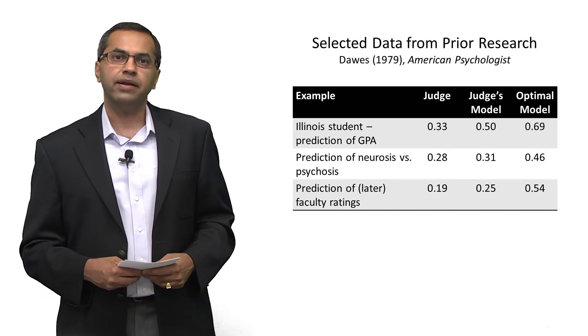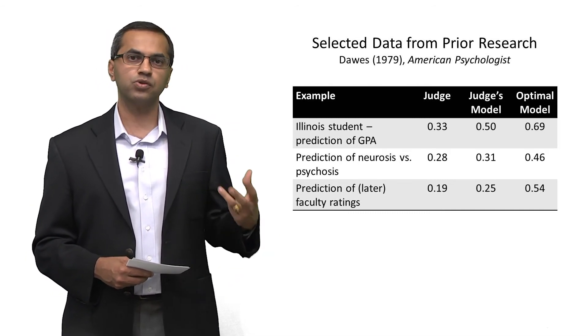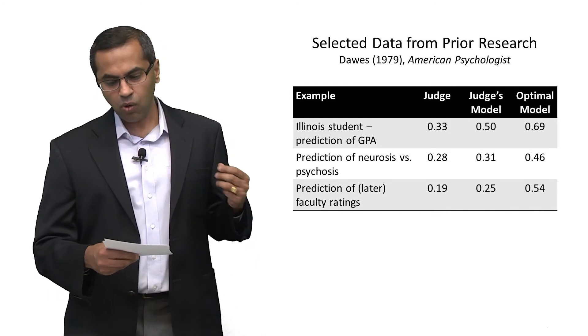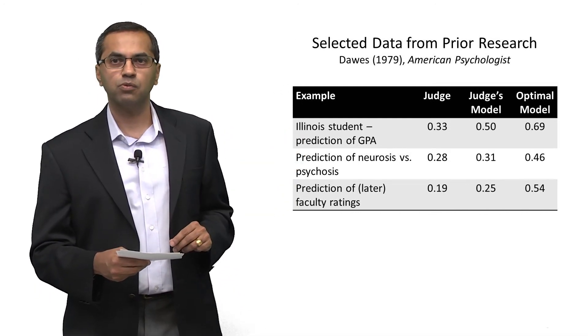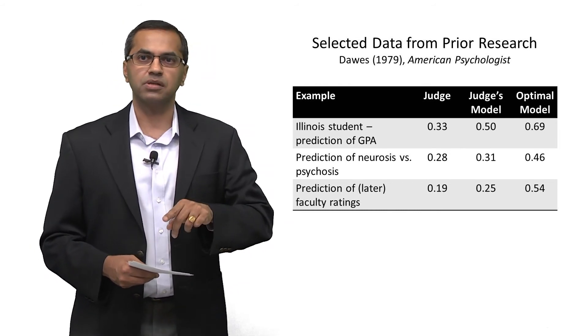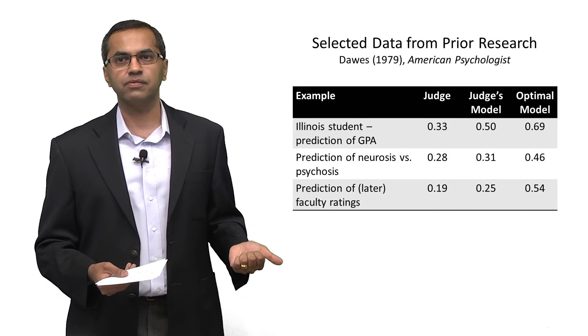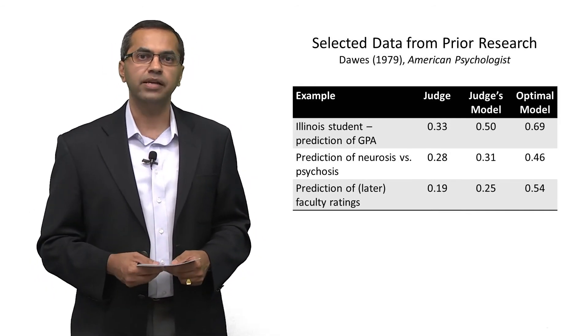In one study where experts were asked to predict the GPA, the grade point average of a number of students in Illinois, the correlation between the expert's prediction and the truth was 0.33. The correlation between the model of the expert and the truth was 0.5. In other words, the model of the expert did a better job than the expert in predicting the truth.